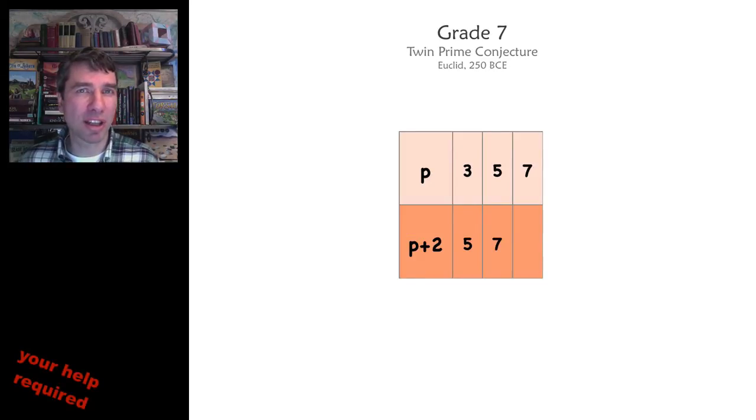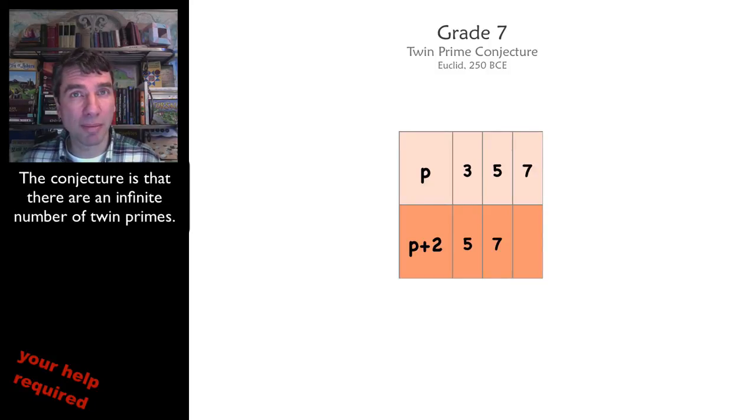Brian Conray suggested that we look at the twin prime conjecture. It's got a long history, and it's a really hot topic right now. Twin primes are primes that differ by two, so for example 3 and 5, 5 and 7.